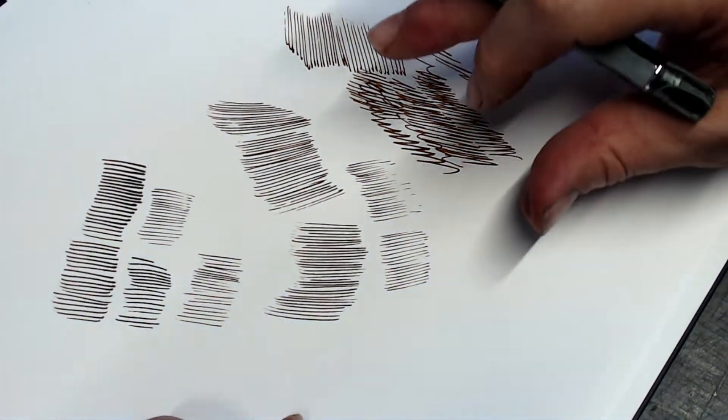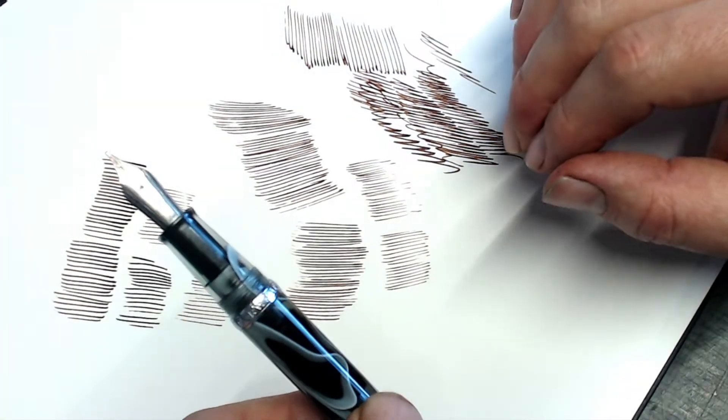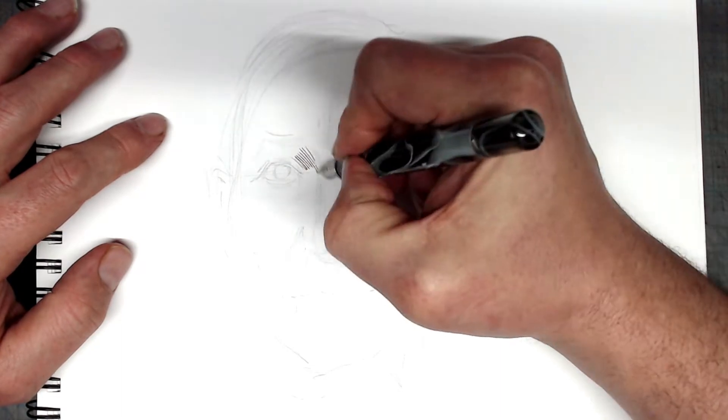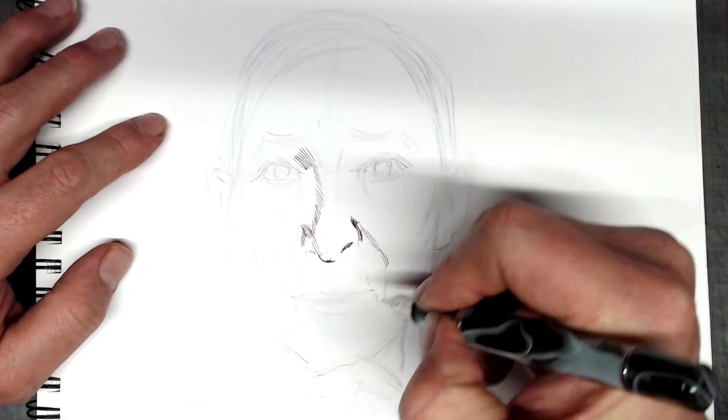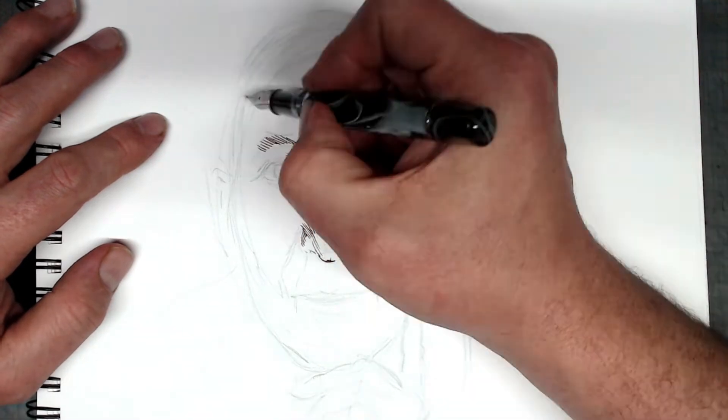And one thing I like about it is that it writes a little bit on the wetter side than some of the Twsbis or the Pen BBS. Let's take this pen out for a test drive and do a little drawing. This is going to be a portrait of one of my favorite writers, Stefan Zweig.